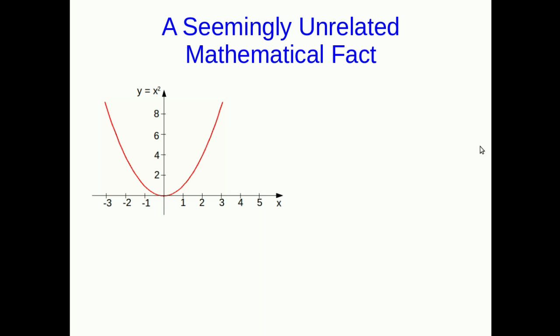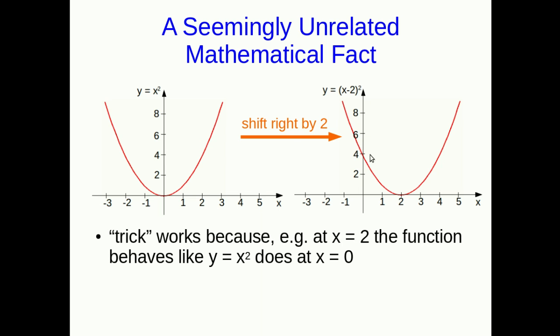Well, here's what is a seemingly unrelated piece of math that you will have learned in high school. Here's a parabola, and it's the most basic of parabolas, y equals x squared. And you will have learned in high school that you can shift this parabola over, say by two, by writing x minus two squared, instead of just x squared. And this little trick works, because now at x equals two, you get a zero in here. And so you've just moved the vertex, which is where the thing being squared is zero, over to here.